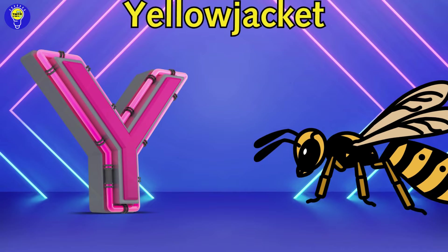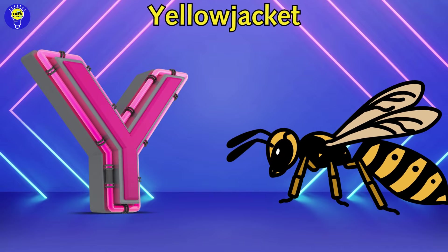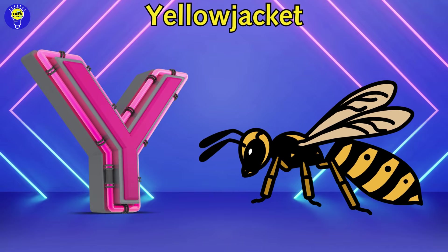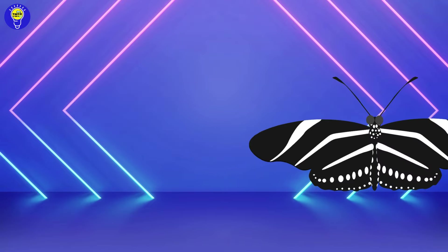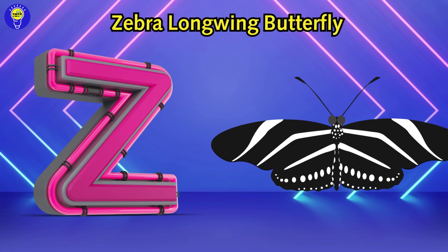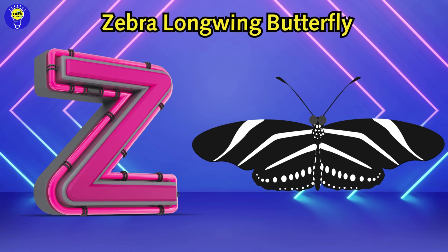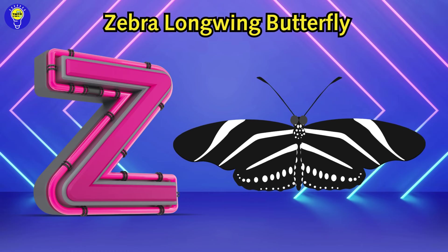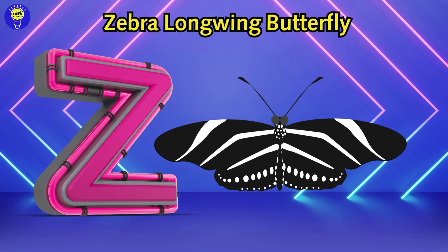Y is for yellow jacket. y, yellow jacket. Z is for zebra longwing butterfly. z, zebra longwing butterfly.